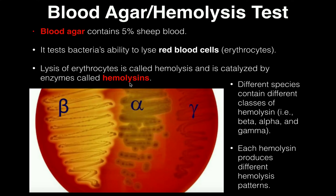There are three types of hemolysis that we can have: beta, alpha, and gamma. Depending on which type of hemolysis is performed, they have a different type of hemolysin. But the important part is being able to characterize what type of hemolysis we have — beta, alpha, or gamma.